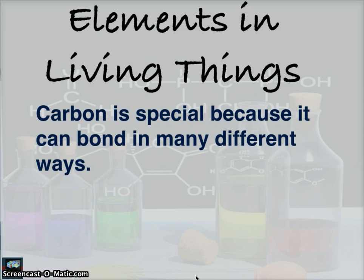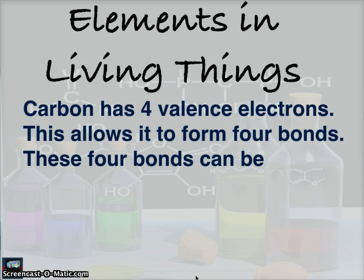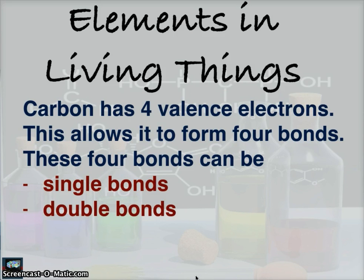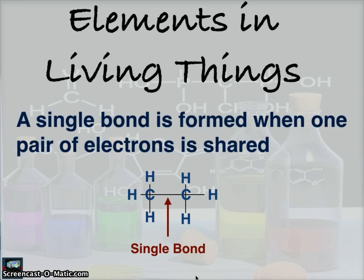Carbon is special because it can bond in many different ways. Carbon has four valence electrons, and this allows it to form four bonds. These four bonds can be single bonds, double bonds, and triple bonds. Here is a single bond — it is formed when one pair of electrons is shared.